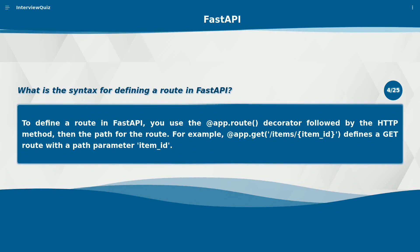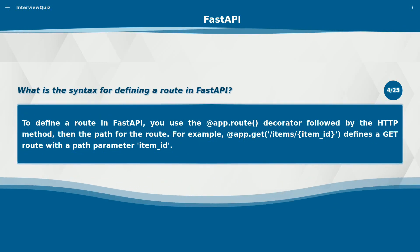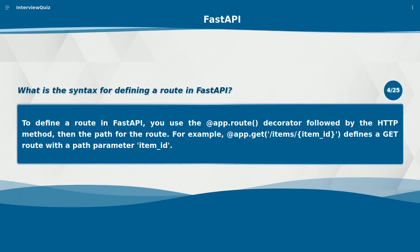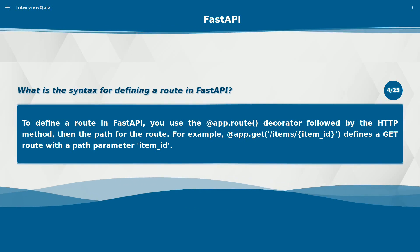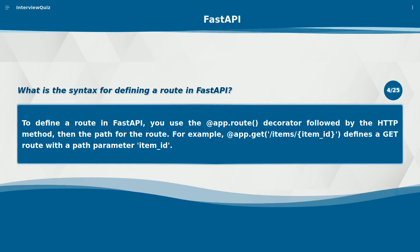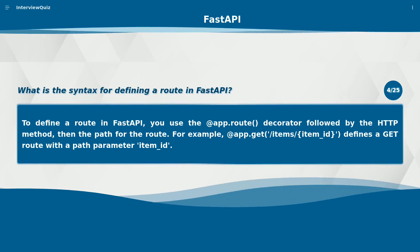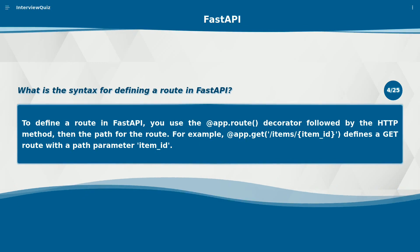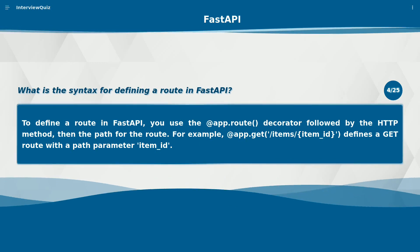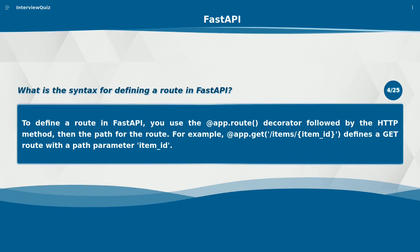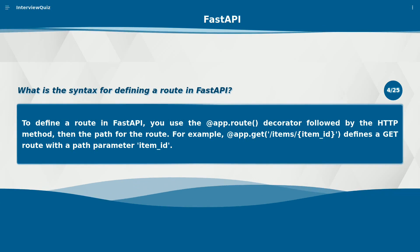What is the syntax for defining a route in FastAPI? To define a route in FastAPI, you use the app route decorator followed by the HTTP method, then the path for the route. For example, @app.get('/items/{item_id}') defines a GET route with a path parameter item_id.